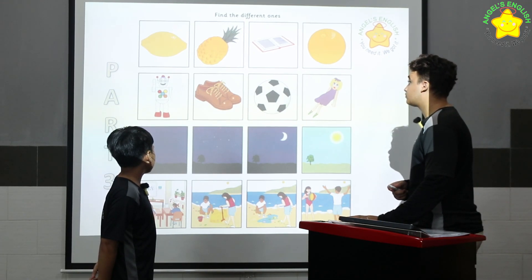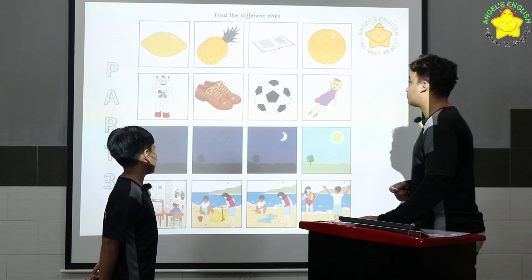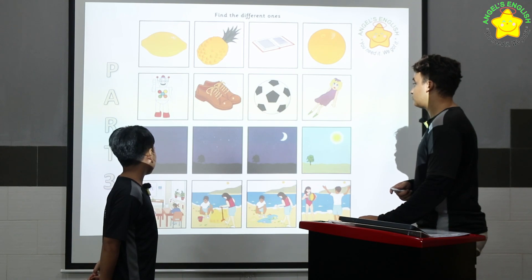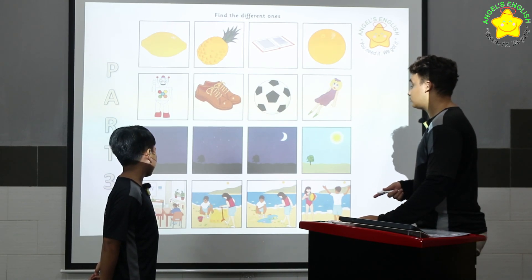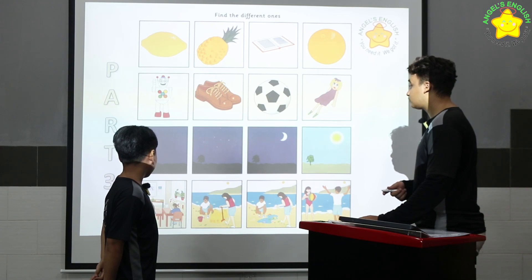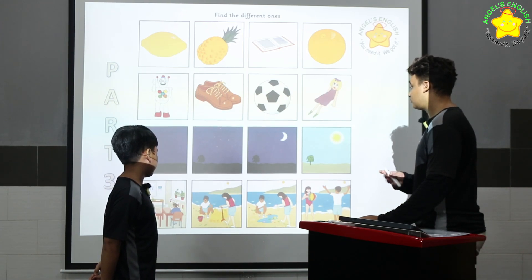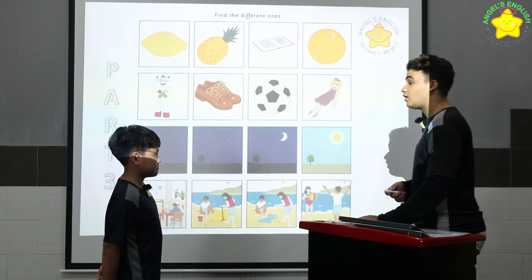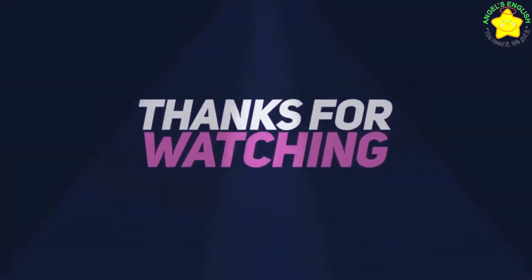There are shoes because in picture one, two, three there are toys. It's picture four because picture one, two, and three are at night. It's picture one because middle two, three, and four are at the beach. All right, you did a very good job. You want to sit down?